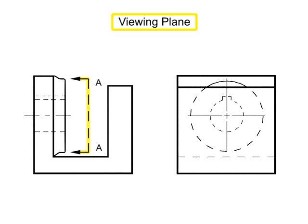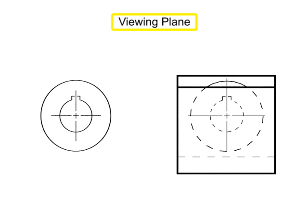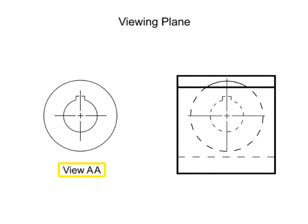A viewing plane line is used when an interior view of the part is helpful in illustrating characteristics, but a full section view is not required.